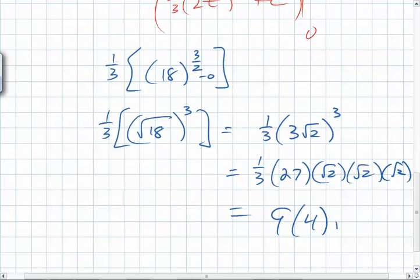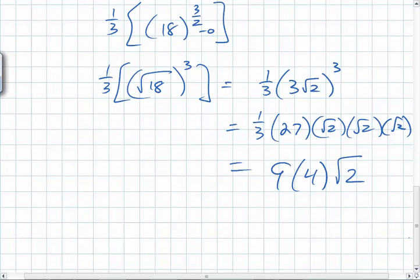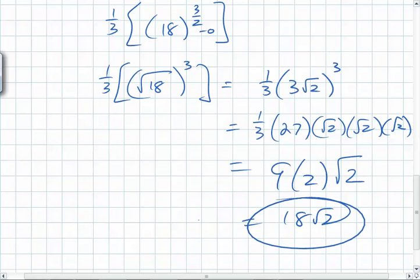Oh, interesting. You guys thought it was 36, didn't you? It's not 4, it's 2. Thank you. So it's 18 root 2. There you go. That's where it comes from.